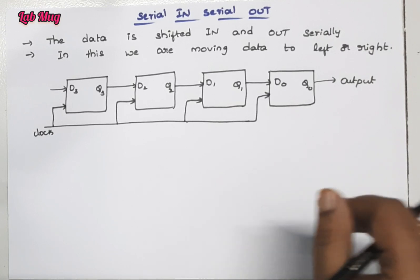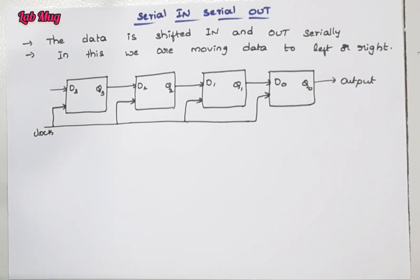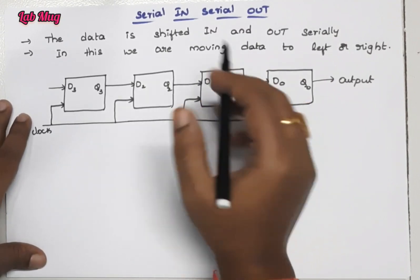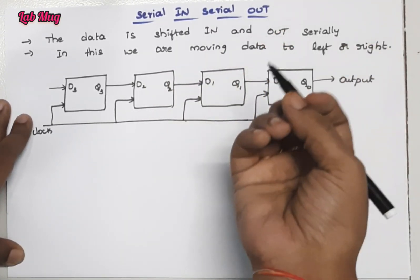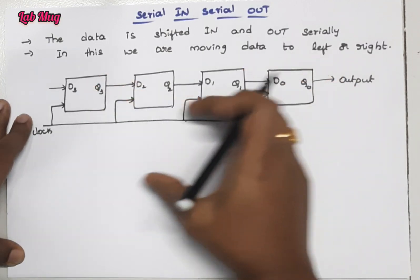The first type is serial in serial out shift registers. The name itself indicates that the input we take is serial and the output we send is also serial.